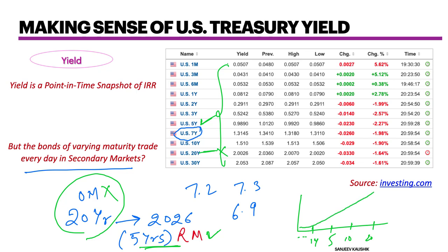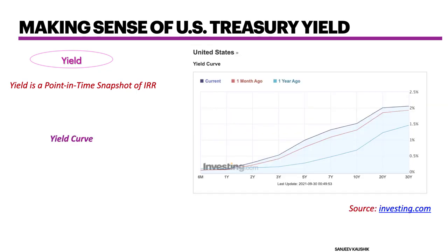The graph would look like yield consistently increasing as we go into higher time periods. This is how the graph would look, and it is called a yield curve. You might have heard about the yield curve on news channels, and towards the end of this educational series you will know everything you need to know about the yield curve as a stock trader or investor.